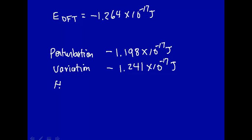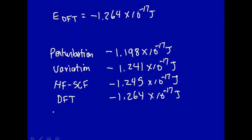We then did a Hartree-Fock self-consistent field calculation. The energy there we got was minus 1.245 times 10 to the minus 17th joule. We just did this DFT calculation, and we got minus 1.264 times 10 to the minus 17th joule, and the exact from experiment is minus 1.266 times 10 to the minus 17th. So we see computational chemistry can get very close to the true value.